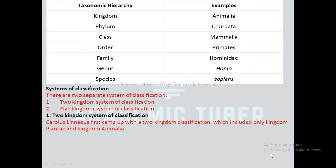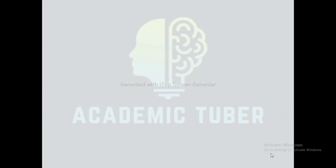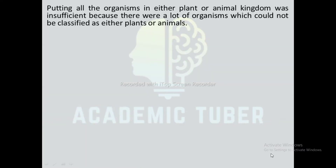Two kingdom system of classification: Carolus Linnaeus first came up with the two kingdom system of classification, which included only kingdom Plantae and kingdom Animalia. There are many limitations of this system: unicellular and multicellular organisms are not distinguished clearly; there is no satisfactory separation of prokaryotes and eukaryotes; algae and fungi are not distinguished properly; and it is not able to classify all organisms. Putting all organisms into either plant or animal kingdom was insufficient, as many organisms could not be classified as either plants or animals.